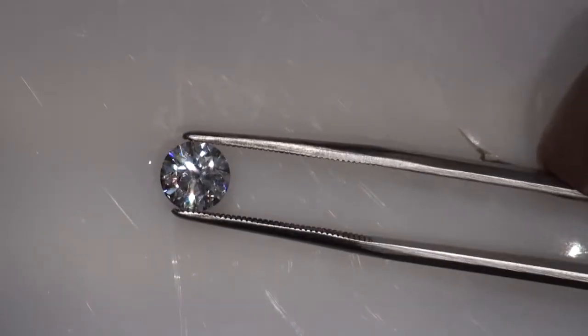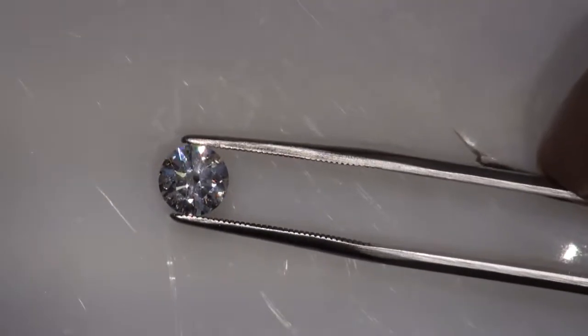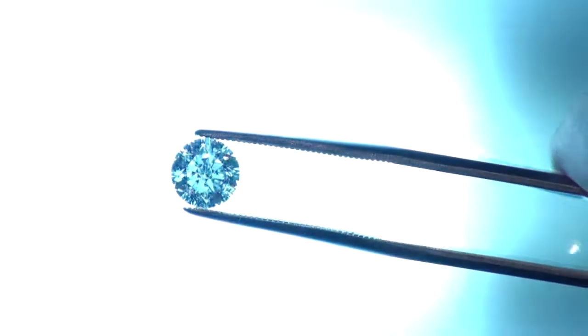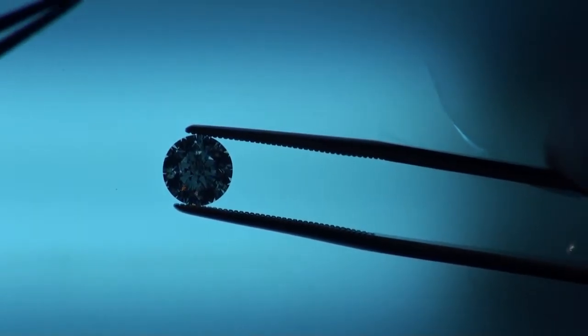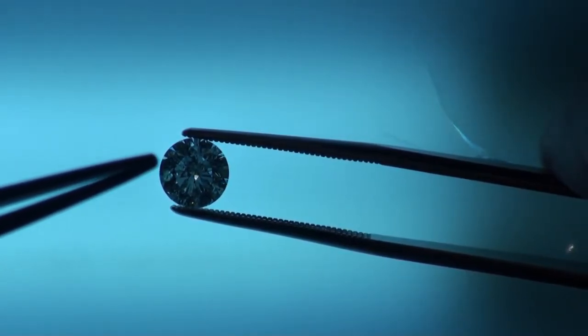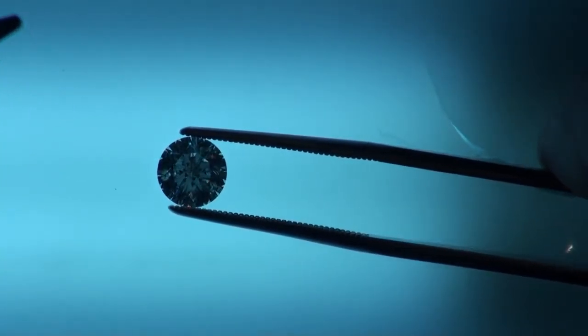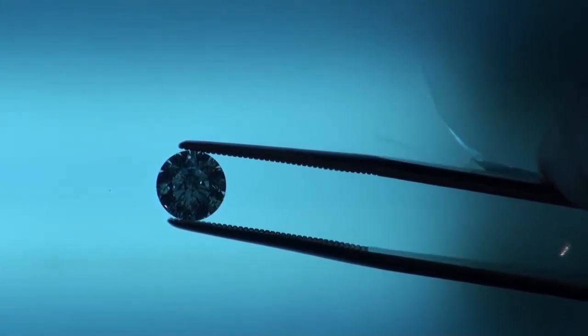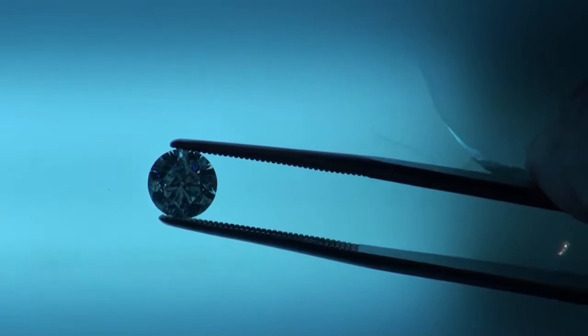All right, so once again, this is the same diamond, and now we're going to really go far out of our way to make the inclusion appear. Let's see, there we go. So if you see where I'm pointing, that's the inclusion that we saw under the microscope. Light shining behind the diamond, it's making its brilliance kind of diminish, and really just brings out the inclusion in the diamond.